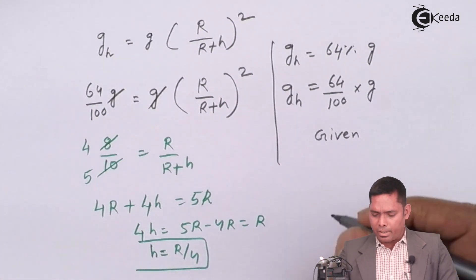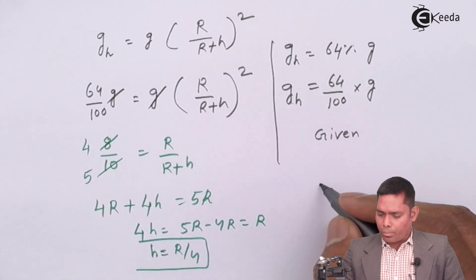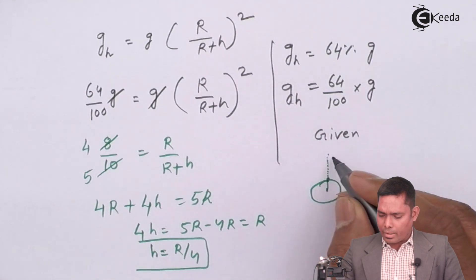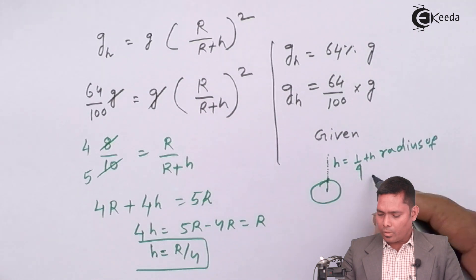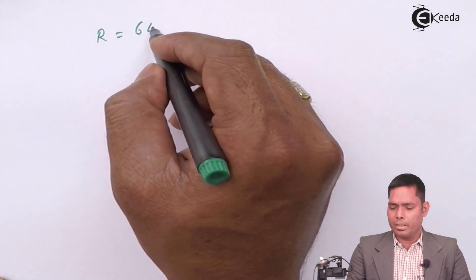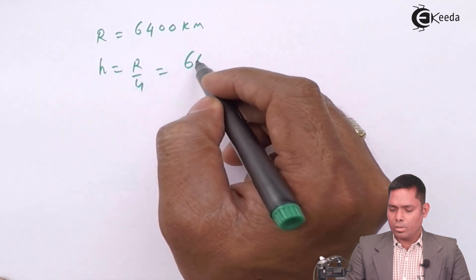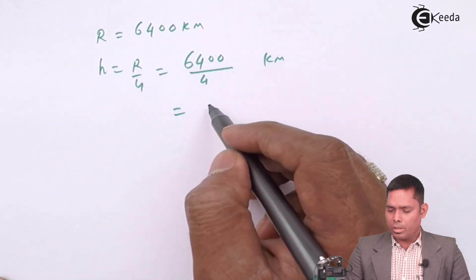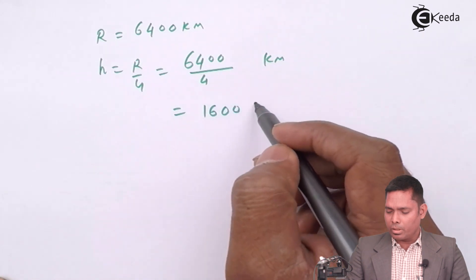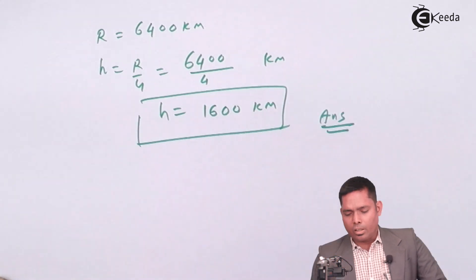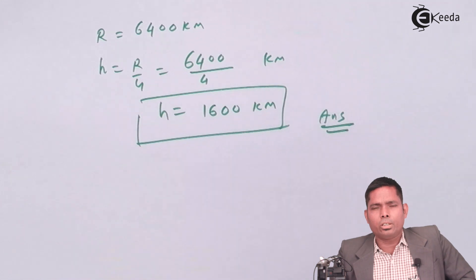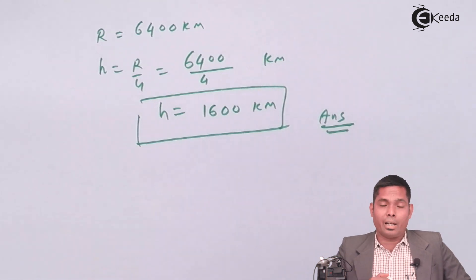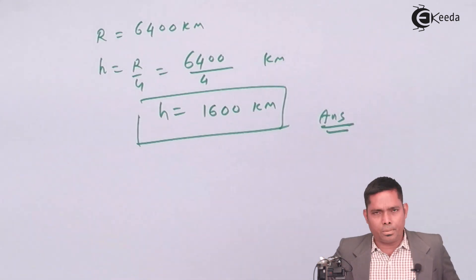This is the answer to this question. That means at what height I have to go up from the surface of the earth. Height equals to one-fourth radius of earth. That means R by 4. R is 6400 kilometers, so height will be R by 4, that means 6400 kilometer divided by 4, so it is 1600 kilometers. This is the answer. That means if I go up to a distance of 1600 kilometers from the surface, then my g at that point will become 64% of that on the surface, that means it will reduce by 36%.